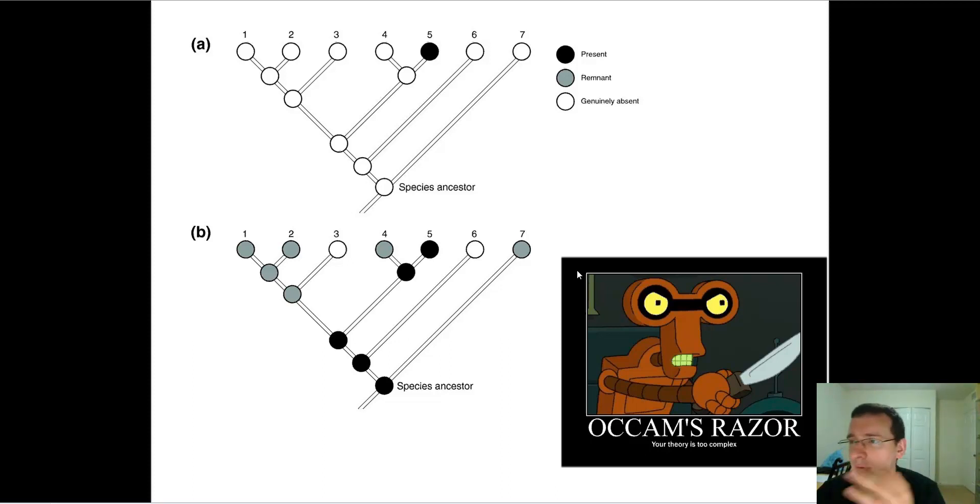We already talked about the fossil record with things like evidence of extinctions of old species and appearance of new species, index fossils, mass extinctions, transition fossils, fossils and living organisms which show evidence of homologous structures, analogous structures,